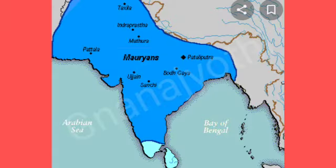Chandragupta Maurya freed North Western India from Greek control. He was an able and ambitious ruler who built a vast empire stretching from the Hindu Kush in the west to Bengal in the east, and from the Himalayas in the north to the Narmada in the south.